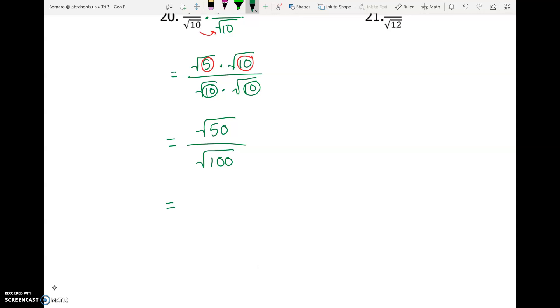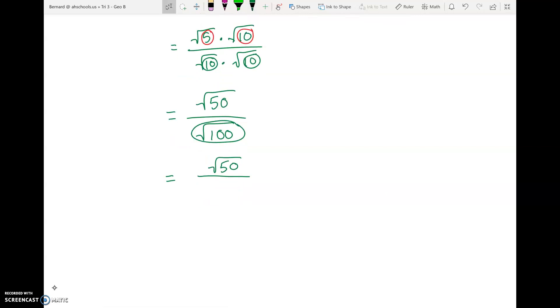And so this next step, we're going to ignore the top for now. I'm going to keep it as square root of 50. But again, the reason why we multiplied by square root of 10 over square root of 10 is because the square root of 100 is a perfect square. If I take the square root of 100, that is actually just 10. And so now I no longer have a square root in the bottom of my fraction. And so that's huge.